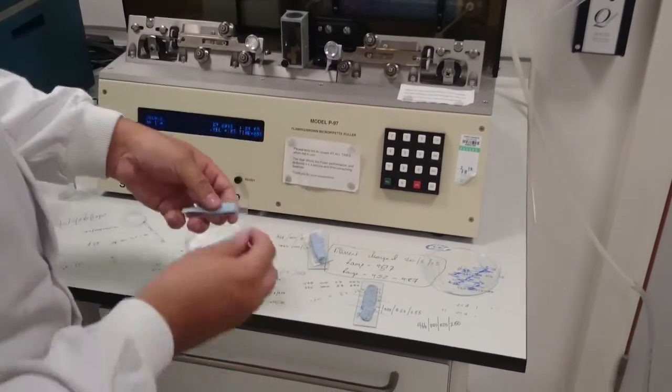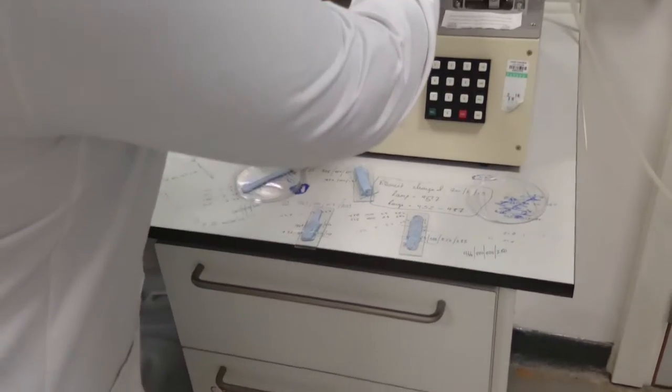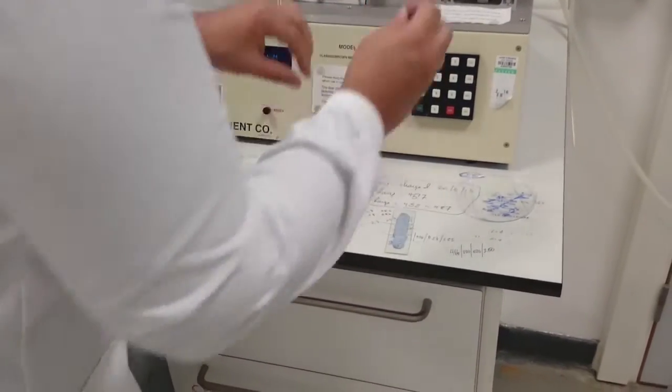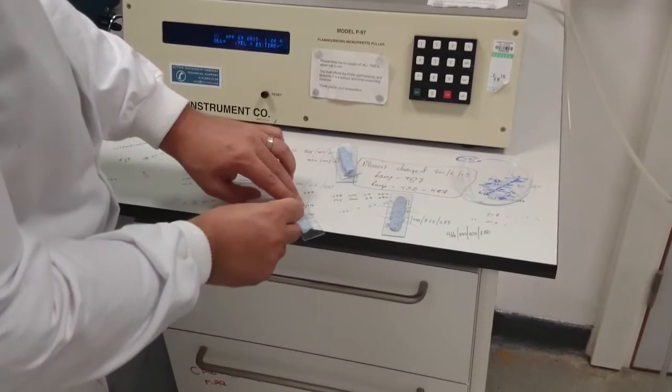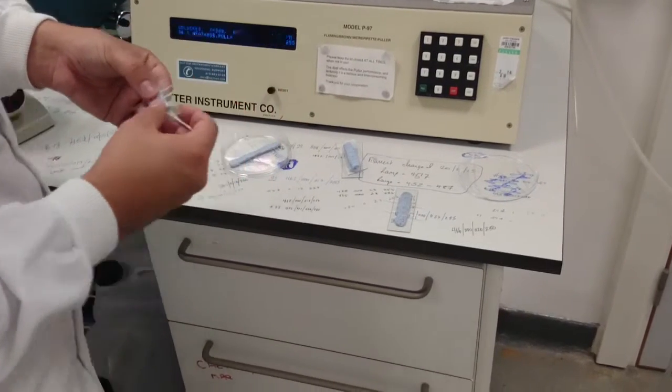It's important to check your tips under a microscope to make sure they've pulled properly. Some tip settings lead to fused tips or broken tips. When a tip is pulled, the end becomes very fragile. I'm now going to show you the difference between an intact tip and a broken tip under the microscope.